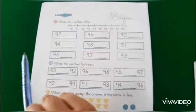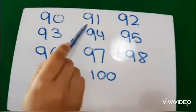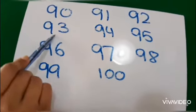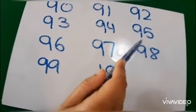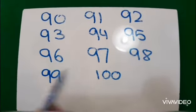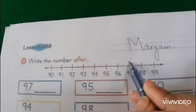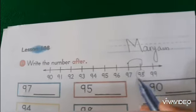Now the number line that we have here is from the 90s family. Let's review what's in the 90s family: 90, 91, 92, 93, 94, 95, 96, 97, 98, 99, 100. Now what it says — what number comes after 97? Let's see where 97 is on the number line. This is 97. Now let's hop forward and see what comes after. 98. So 97, 98.